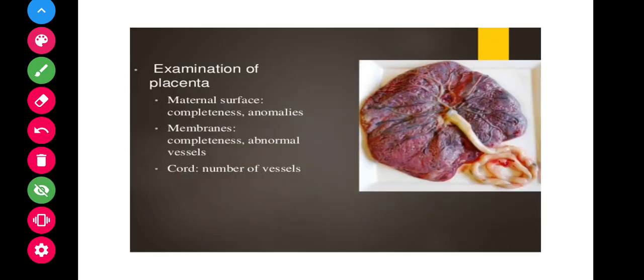After removing the placenta, examine both surfaces. The fetal surface is where the umbilical cord is joined; the maternal surface is where it was attached to the fundus of the uterus. Check for completeness — any anomalies, and whether the membranes are completely removed — because any remaining particles can cause uterine infection. Also check the cord for the number of vessels, including the arteries and veins.